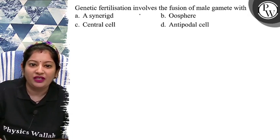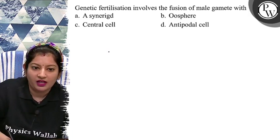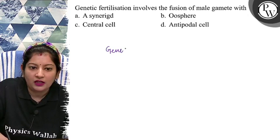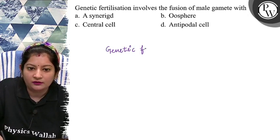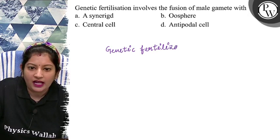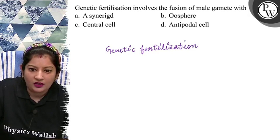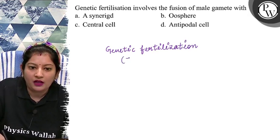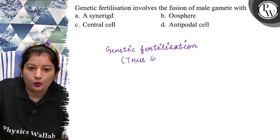So, genetic fertilization involves — सबसे पहले हमें यहाँ पर पता होना चाहिए: Genetic fertilization is the true fertilization. Double fertilization का true event है यह। Genetic fertilization आपका true fertilization या true syngamy भी हम इसको लिख सकते हैं यहाँ पर।